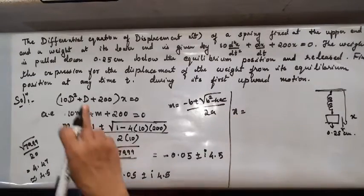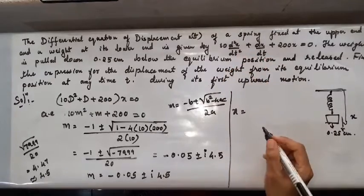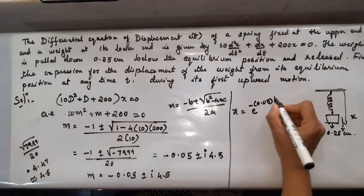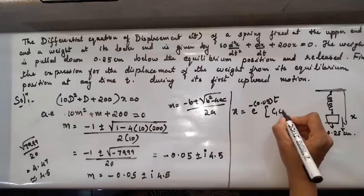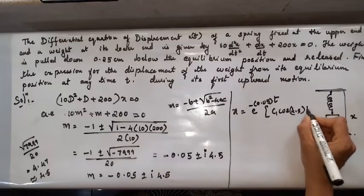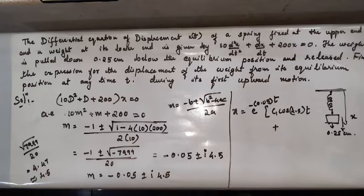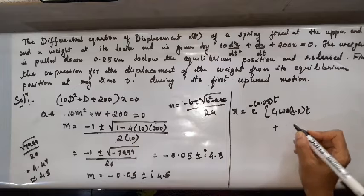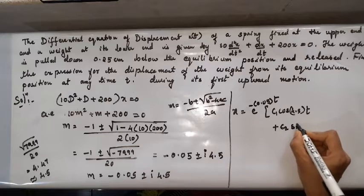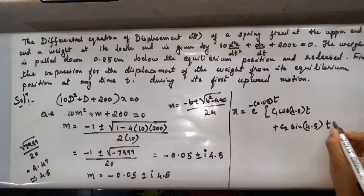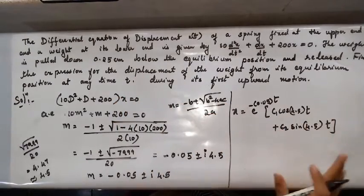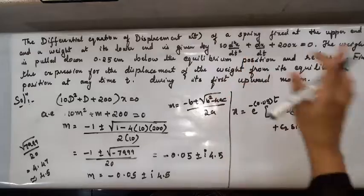Now what should be the solution? Since the variable is t, x should be expressed in terms of t. The solution is x = e^(−0.05t) [c₁ cos(4.5t) + c₂ sin(4.5t)]. This is the expression for displacement in terms of t, but we need to find the constants using the given initial conditions.